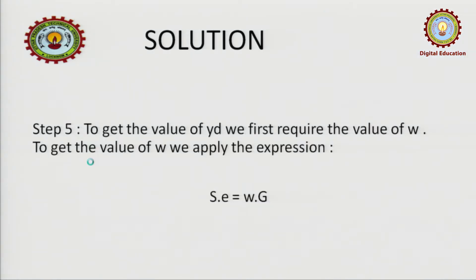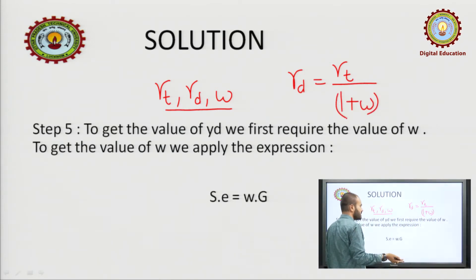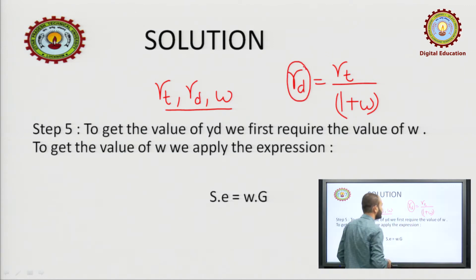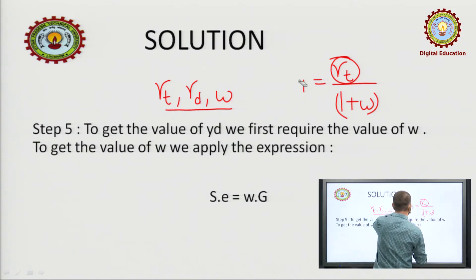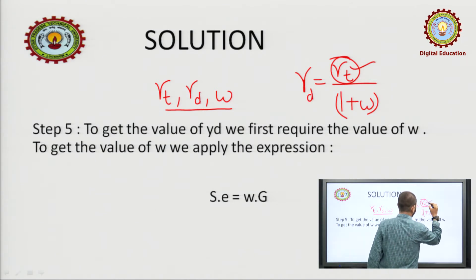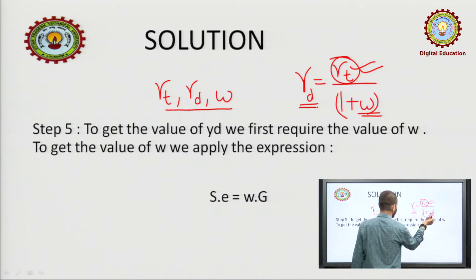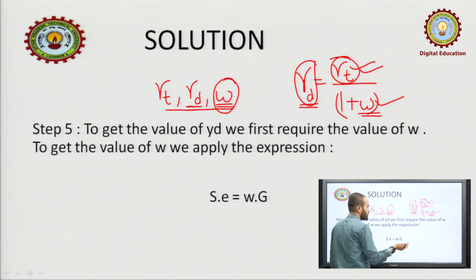This was the first part — gamma T. We were also asked for gamma D and W. There is an expression: gamma D equals gamma T upon (1 + w). Since we need W anyway in the question, let us calculate W first, and then use it to find gamma D.